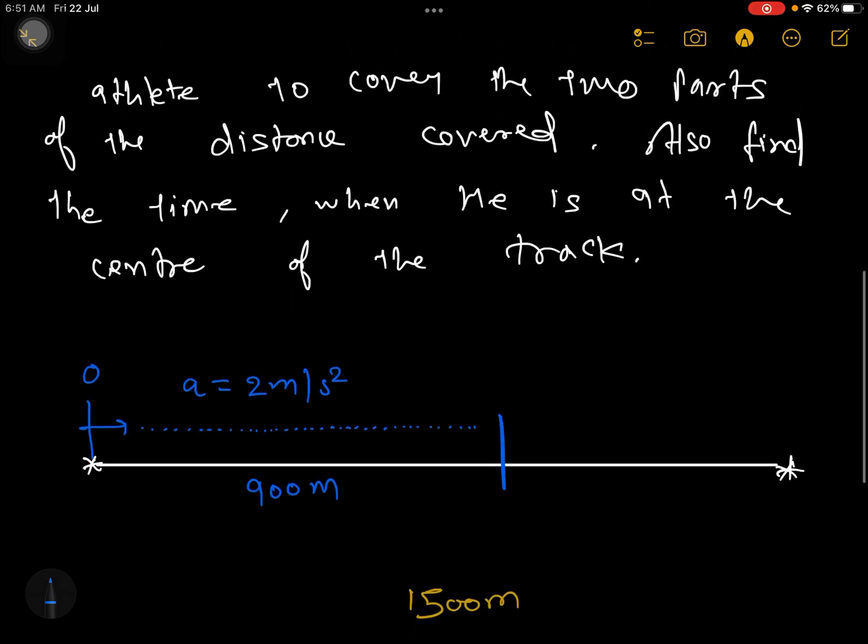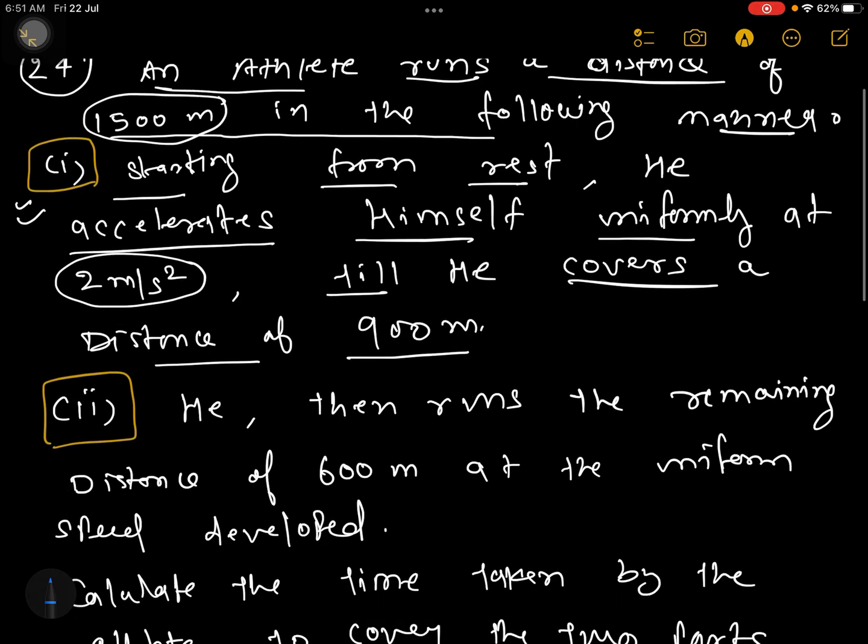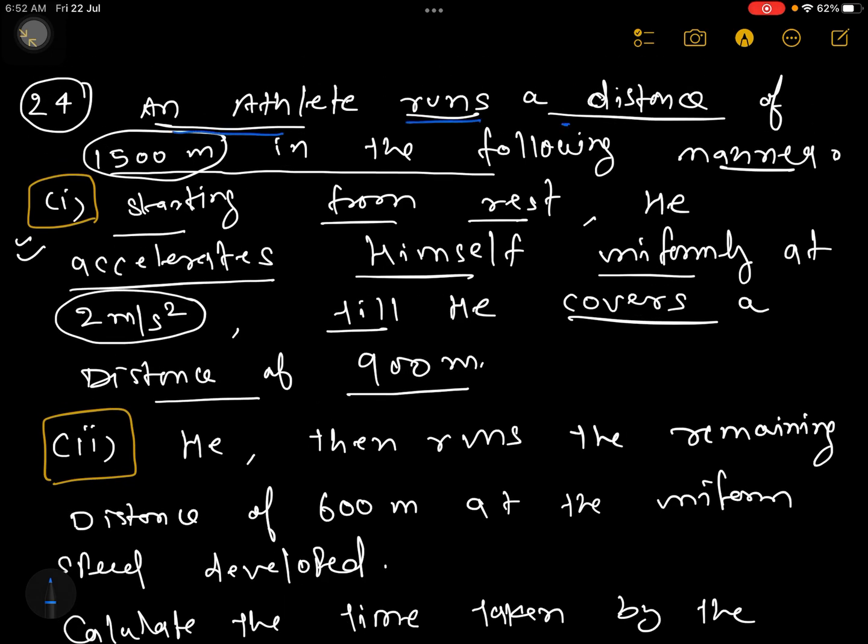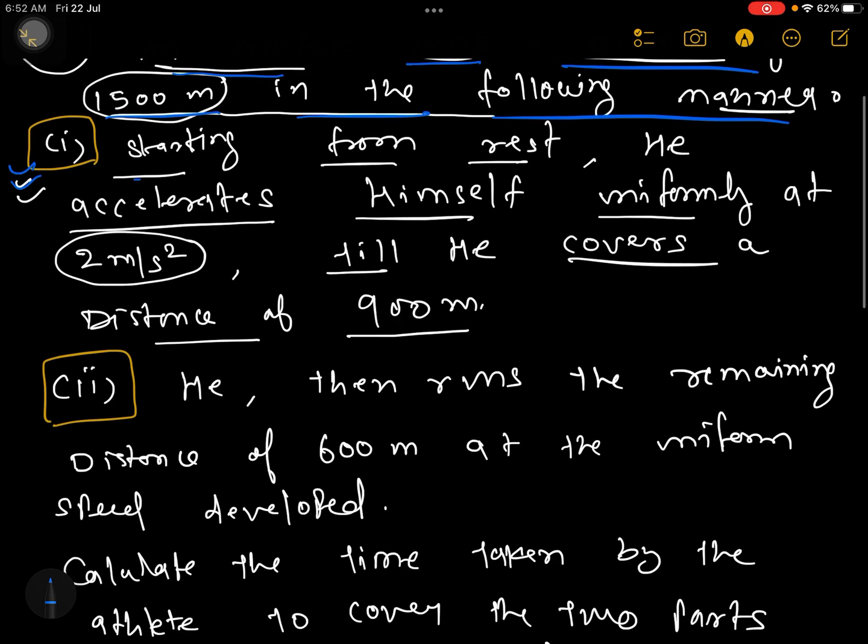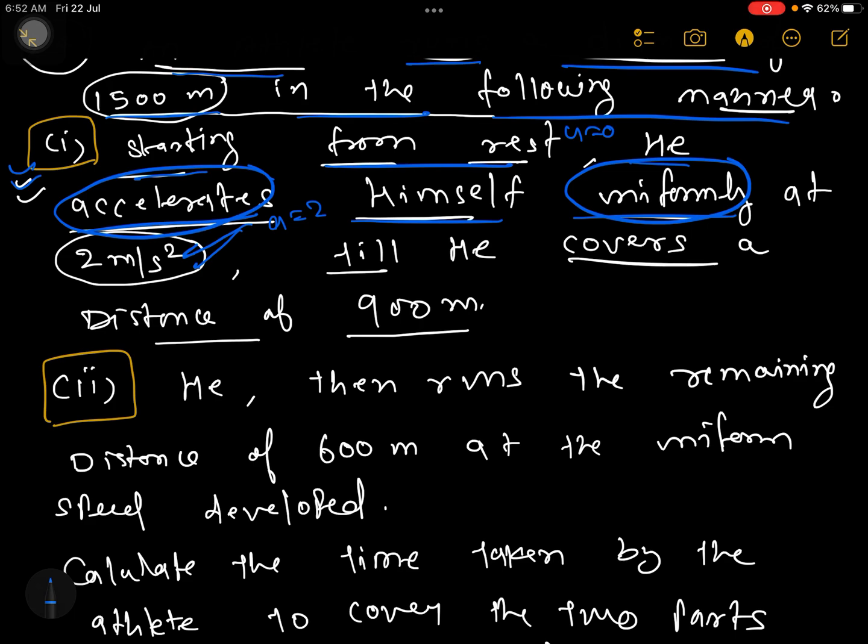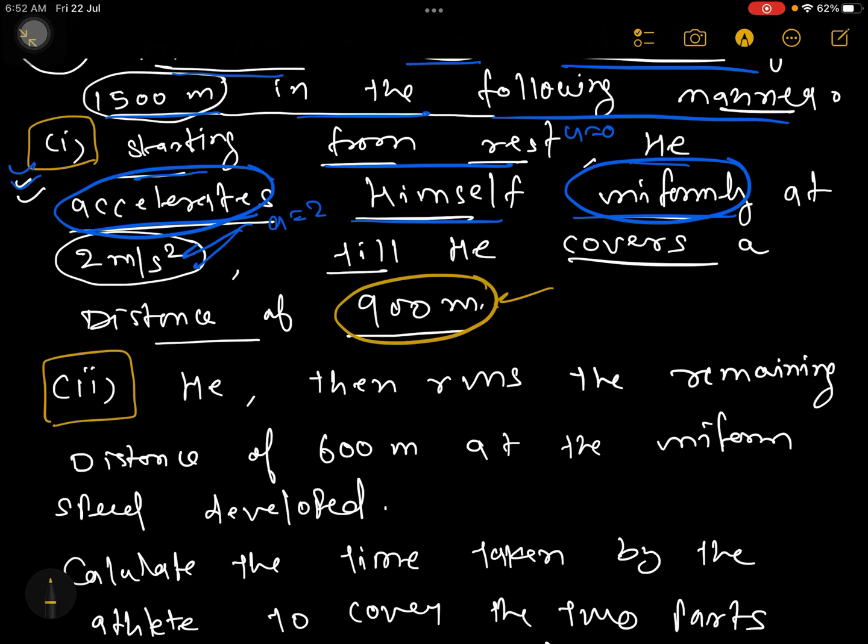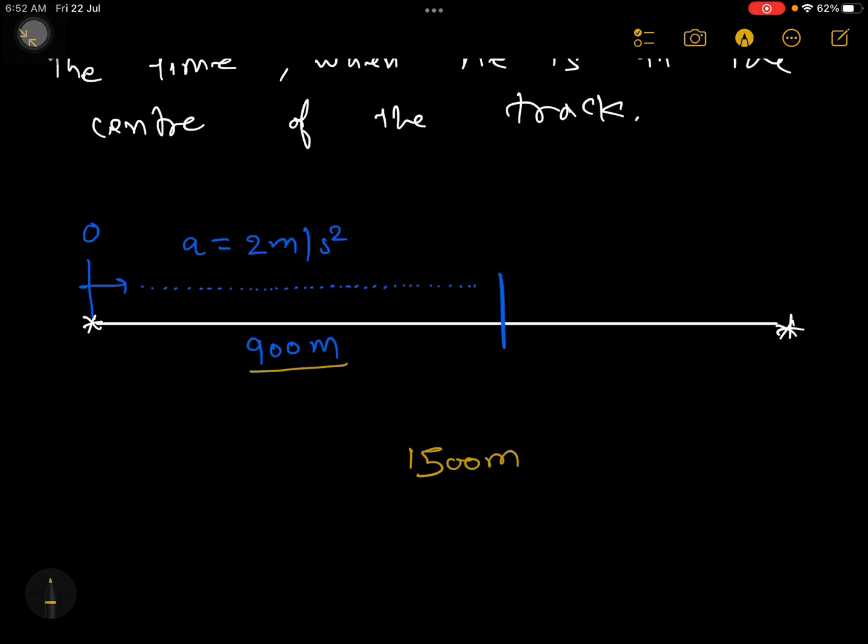Let me read the question again. An athlete runs a distance of 1500 meter, that is the total distance, in the following manner. The first manner is starting from rest, which means u is equal to 0. He accelerates himself uniformly, with uniform acceleration. It means that a is equal to 2 meter per second square as given here, till he covers a distance of 900 meter. So this distance what is given here is 900 meter.